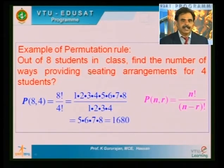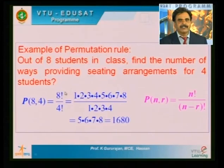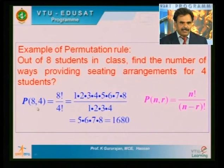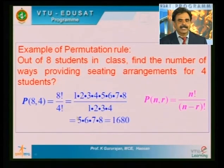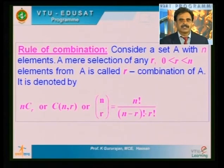Another permutation example: a class of 8 students, but only 4 appear on a particular day. In how many ways can we give seating arrangements to 4 students out of 8? The answer is P(8,4) equals 8 factorial divided by (8 minus 4) factorial, which equals 1680.